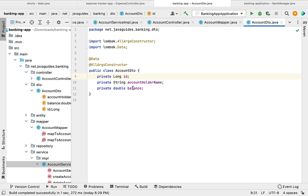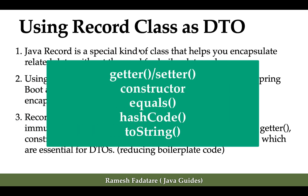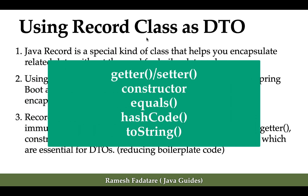Record class is a special type of class which is introduced in Java 16. We can use record class to transfer the data between client and server. The record class is a special kind of class that helps you to encapsulate related data without the need for boilerplate code. Once we create a record class, the Java compiler will automatically generate getter methods.